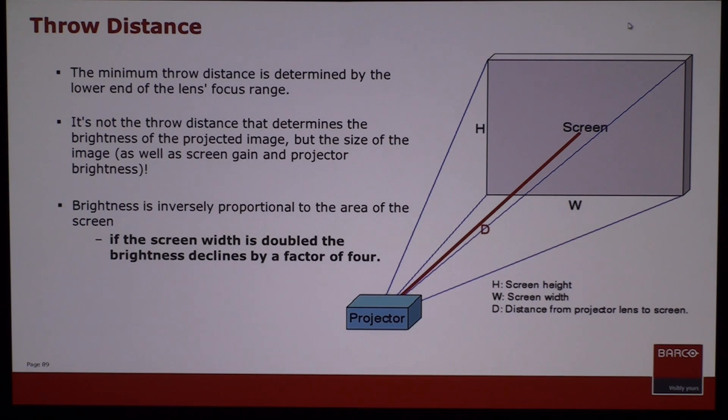The minimum throw distance is determined by the lower end of a zoom lens's focal range. Not all lenses are zoom lenses, but if you get a lens that says, say, 1.2 to 1 to 3.0 to 1,